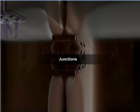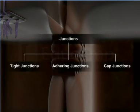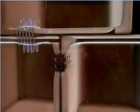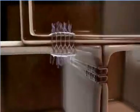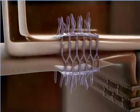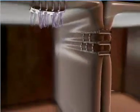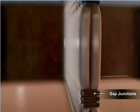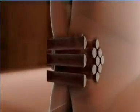Irrespective of their type, the epithelial cells are connected to each other by means of junctions. The three types of junctions usually observed in the epithelial cells are tight junctions, adhering junctions, and gap junctions. The tight junctions between the cell membrane act as barriers to prevent leakage of fluids and proteins. Adhering junctions perform the function of holding the cells together. The gap junctions act as communicators between the cells, supporting the exchange of materials and nutrients.